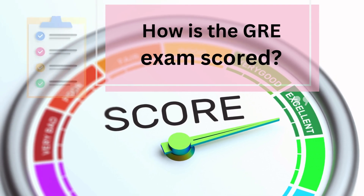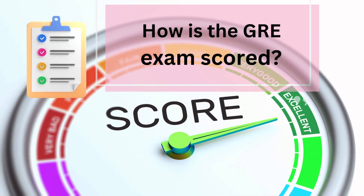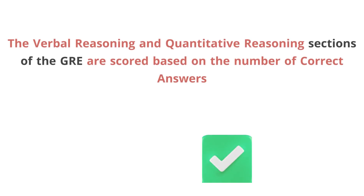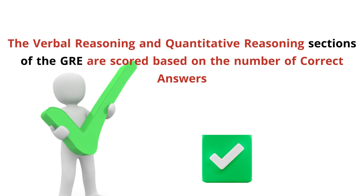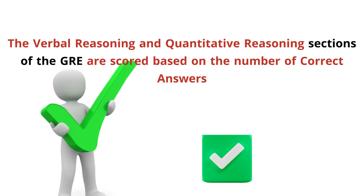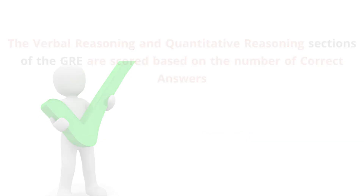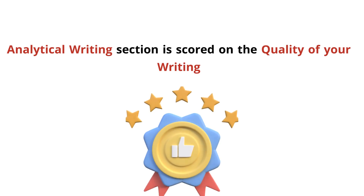How is the GRE exam scored? The verbal reasoning and quantitative reasoning sections of the GRE are scored based on the number of correct answers, while the analytical writing section is scored on the quality of your writing.